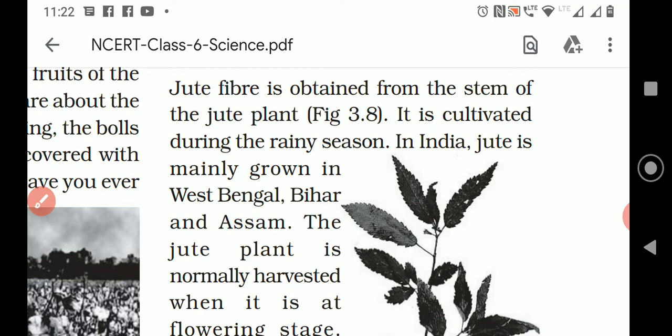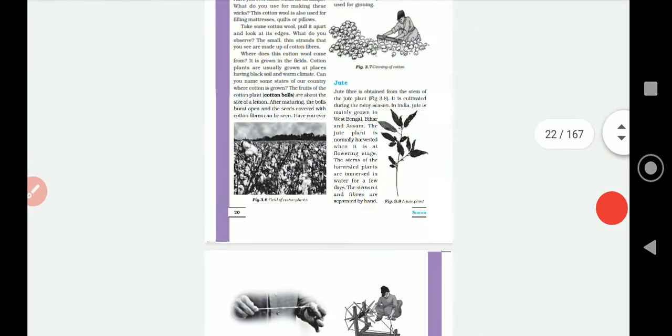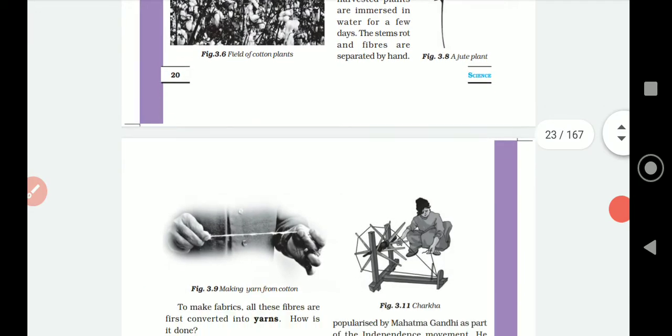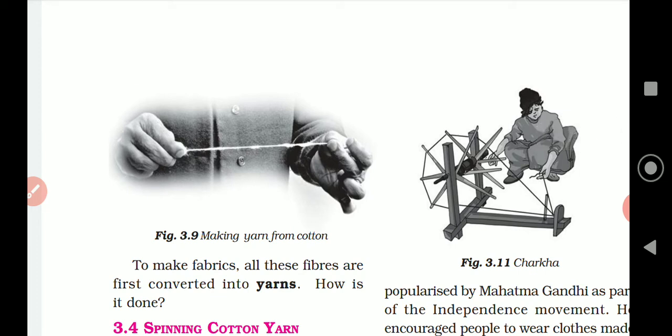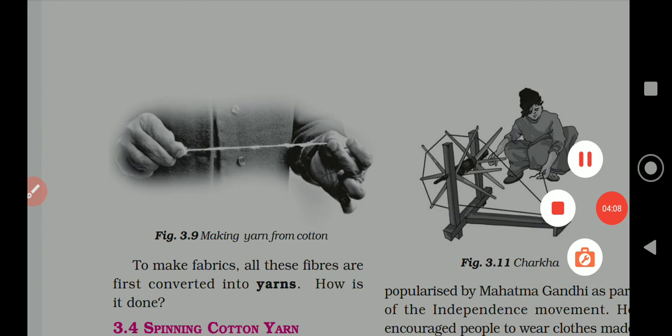So, you have to draw the jute plant and then underline the whole paragraph. Moving ahead, you can see making yarn from the cotton. This activity you have to do. Now we are going to make yarns or threads out of the cotton. Bring some cotton and keep it with you. To make fabric, all these fibers are first converted into yarns. How is this done? That we will see in the next video. Thank you.